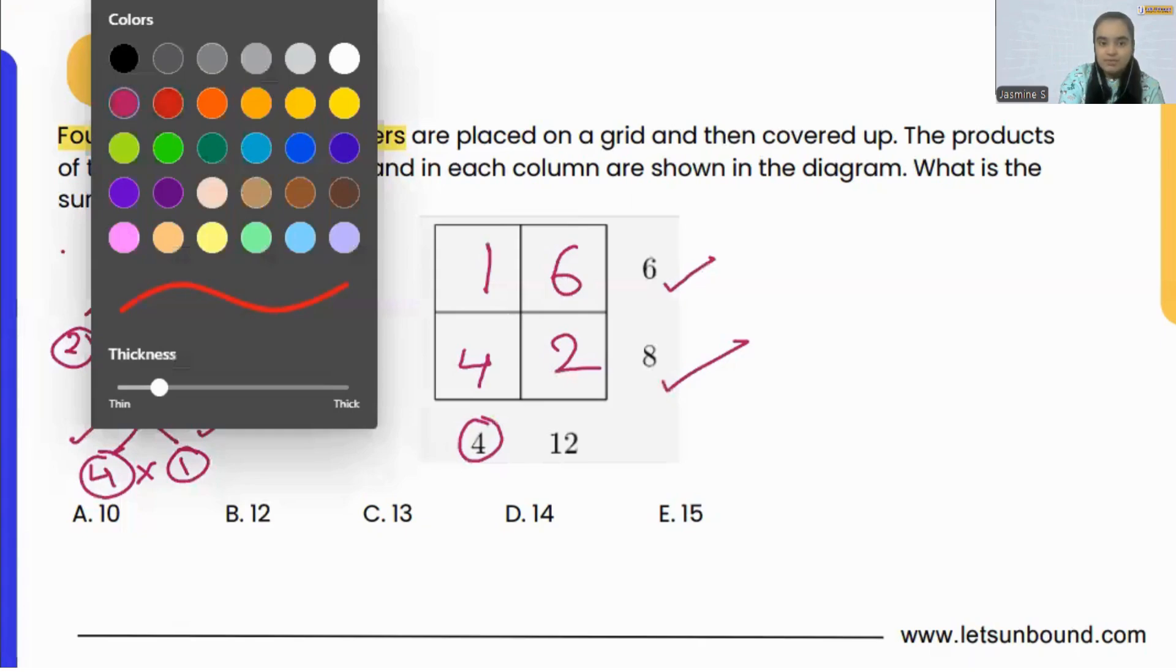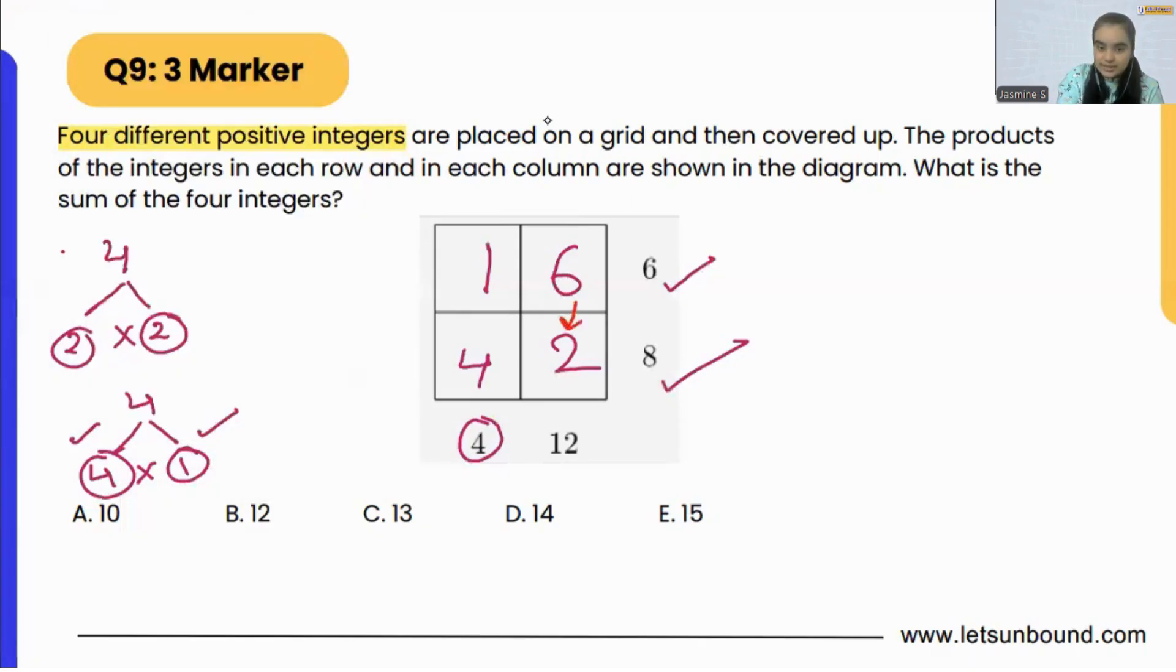And you can check the bottom version of it. Six times two is twelve. Every condition is fixed, right? We got four different numbers. While multiplying rows or the columns, the numbers which are written here and here, if we multiply them, we are getting the same answer. Correct?